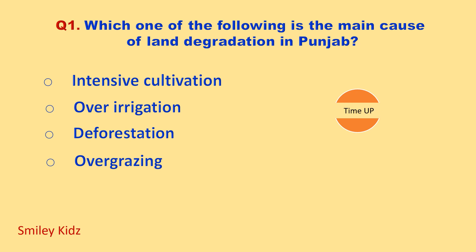Time up. The correct answer is over irrigation. Over irrigation is the main reason or cause of land degradation in Punjab.